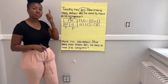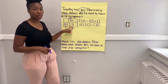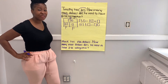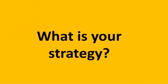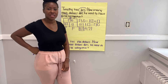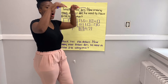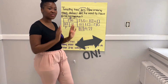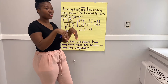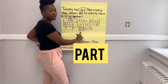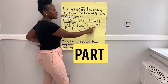Now we need to think about what strategy we can use when we're looking for our unknown part. Tell me, what strategy can we use? Today we're going to practice using the count-on strategy. When we count on, we start at our known part and count on until we get to our whole.